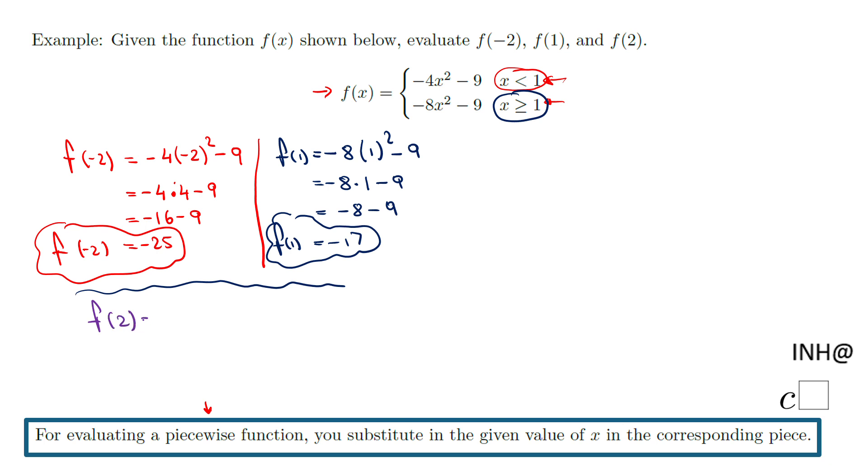what piece of the piecewise function I'm going to use to evaluate this function at 2? Where is that 2 located? It's located right here. It's a number that is greater or equals 1.